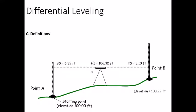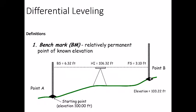One more example of the leveling process: you have a benchmark whose reduced level is known and a point whose reduced level you want to find. Using the height of instrument method, take the reading on the benchmark, add it to the reduced level of the benchmark — that becomes your height of the instrument. Then place the leveling staff on the unknown point, subtract the reading from the height of instrument to get the reduced level of that point. Once you've found that value, you now have two benchmarks.